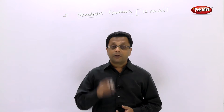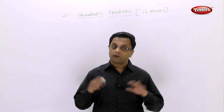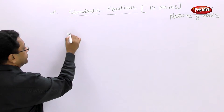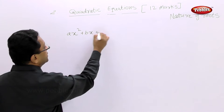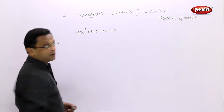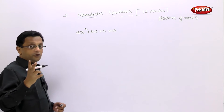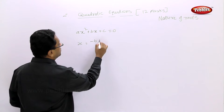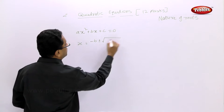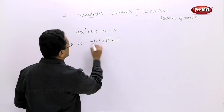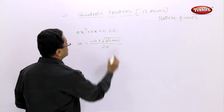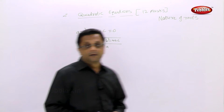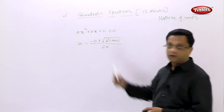The next topic is the nature of the roots of a quadratic equation. We know that the quadratic equation ax² + bx + c = 0 has two roots alpha and beta, that is, roots are given by (-b ± √(b²-4ac)) / 2a.